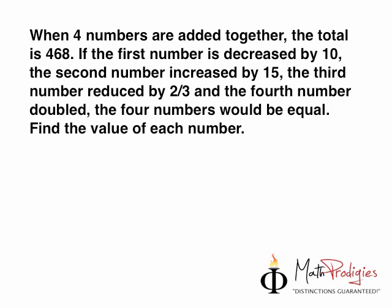First off, you need to understand a few things. When four numbers are added together, so the sum, so for example, let's just play a little game. This plus this plus this plus this equals to what? 468. Good job. Now, if the first number is decreased by 10, the second number increased by 15, the third number reduced by 2/3, and the fourth number doubled, all these are actually too much details. It's very difficult. But what we're gonna do is we're gonna make it simple.